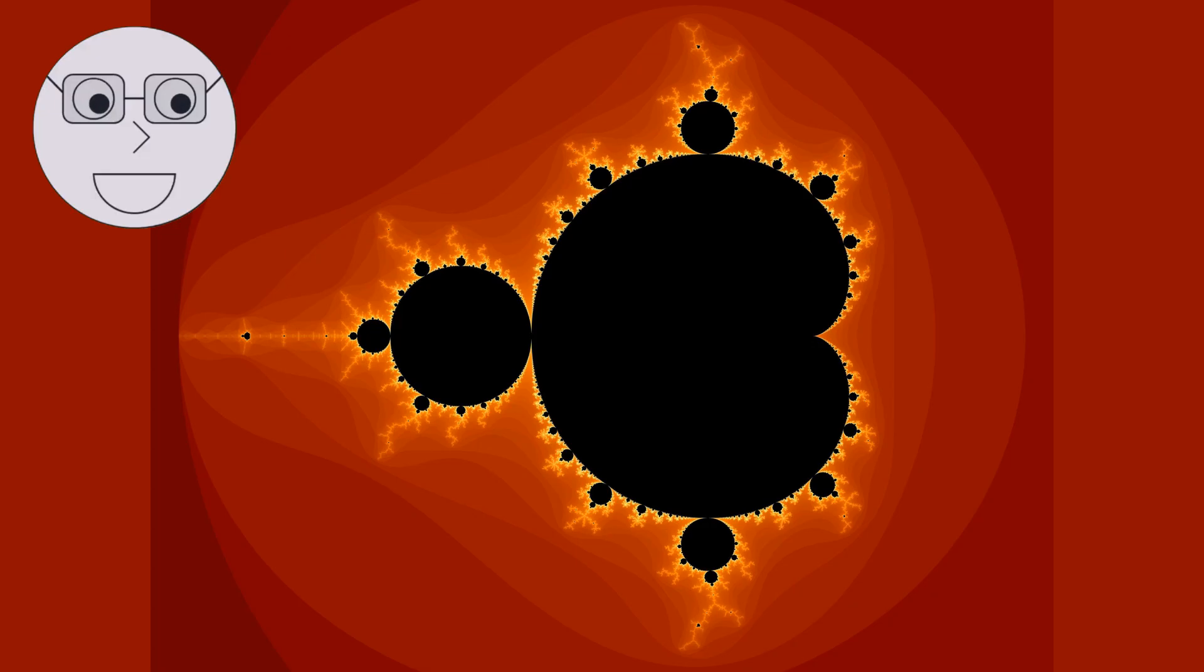Another example of chaos theory in action is the Mandelbrot set. This is a fractal that is generated by a simple mathematical formula. The Mandelbrot set is a beautiful and intricate pattern that exhibits self-similarity at different scales. The Mandelbrot set has been used in a wide range of applications, from computer graphics to cryptography.